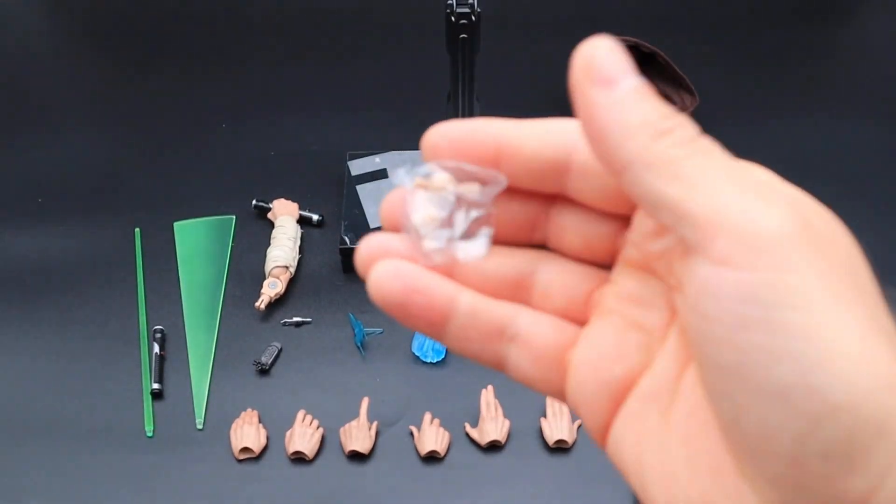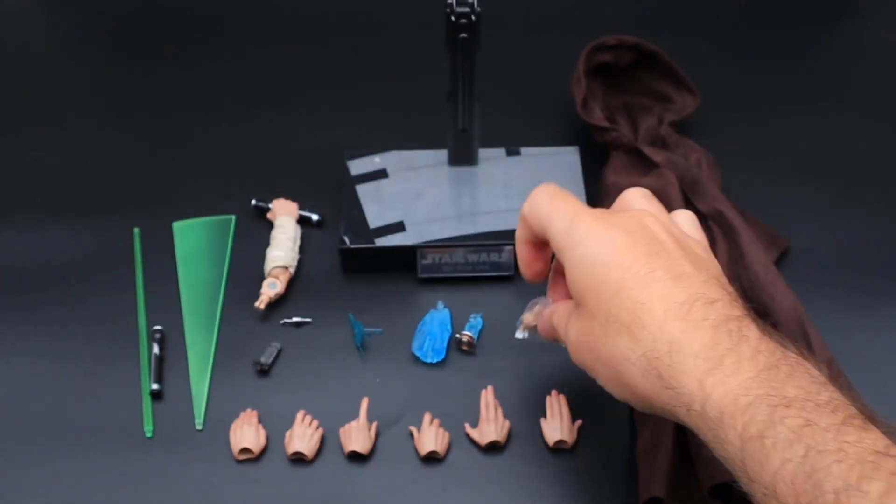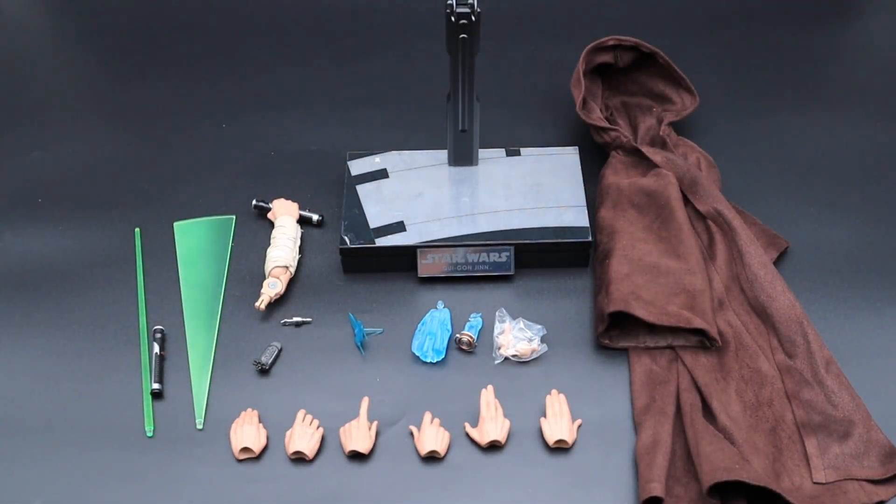Then of course you get some spare wrist pegs. And that's basically all the accessories that Qui-Gon comes with. So what we'll do now is we'll take a closer look at him and see how much movement you get with Qui-Gon.